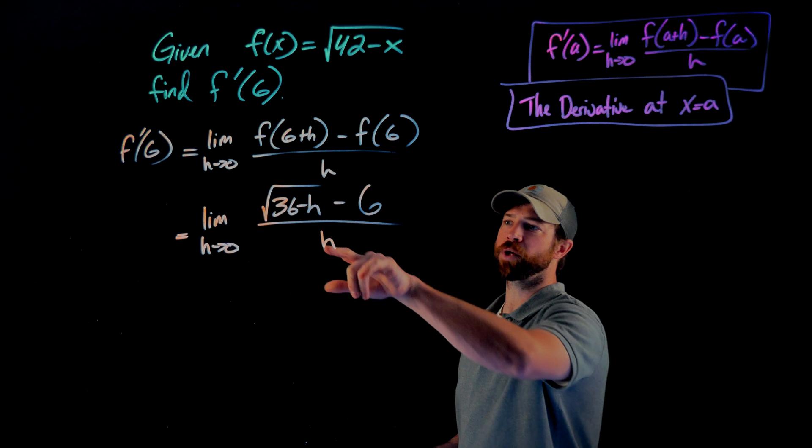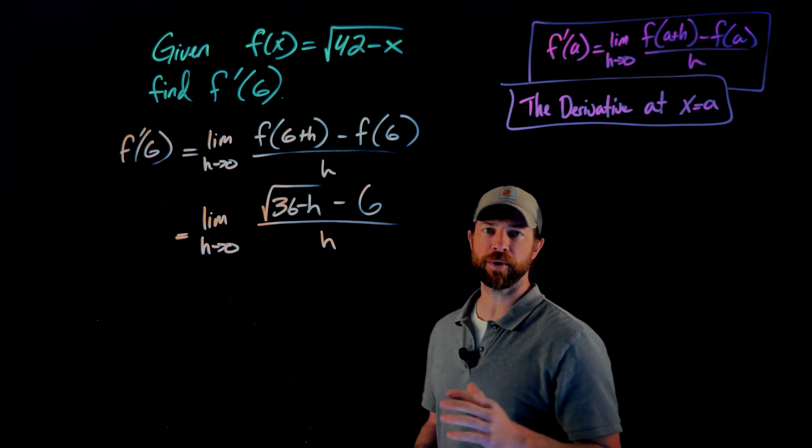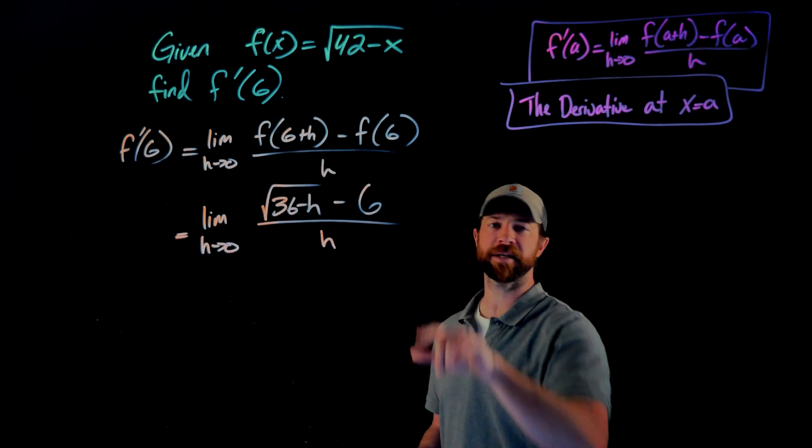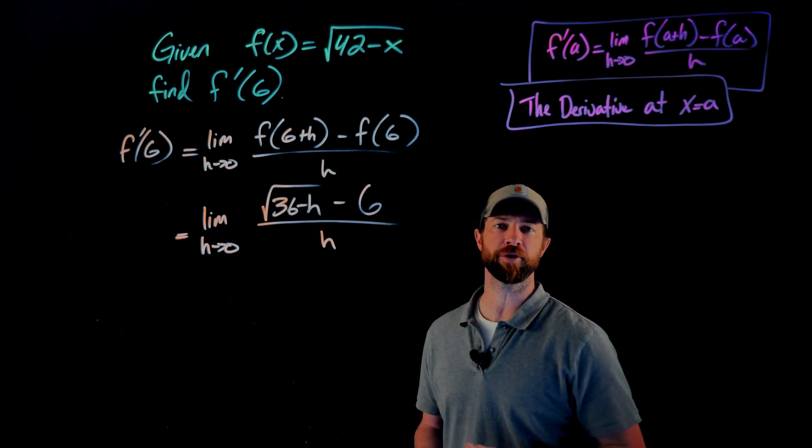In this case right here, since we have this square root term, one of the main tricks we will use for this is to multiply the numerator and the denominator by the conjugate of the numerator.